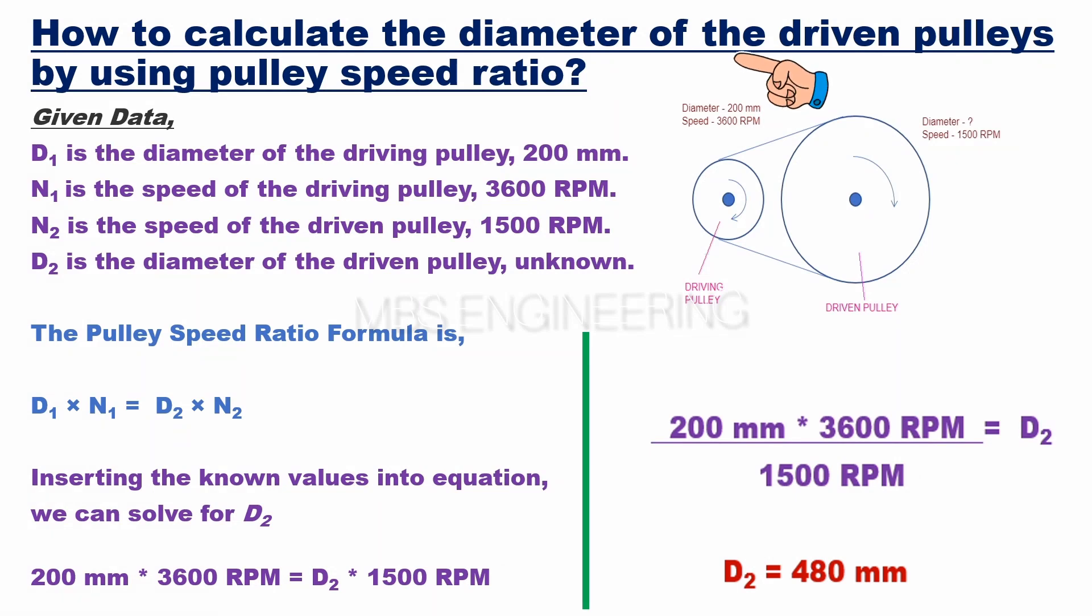Next, let's understand how to calculate the diameter of a driven pulley using the pulley speed ratio formula. For this, we need to consider the following data. D1 is 200 mm, diameter of the driving pulley.